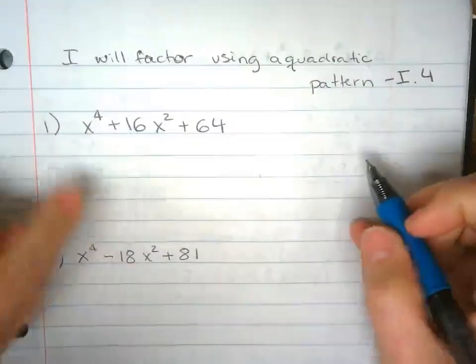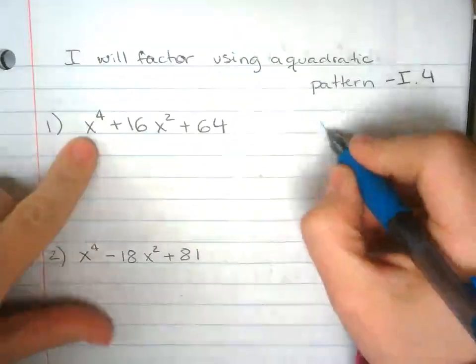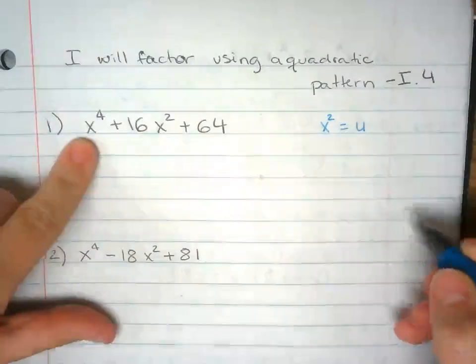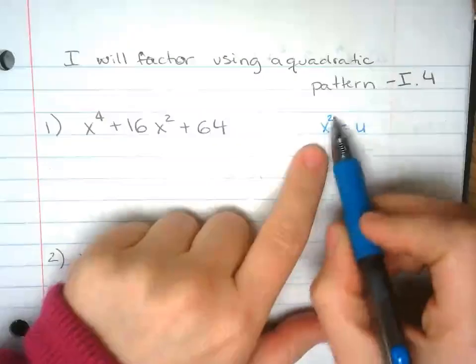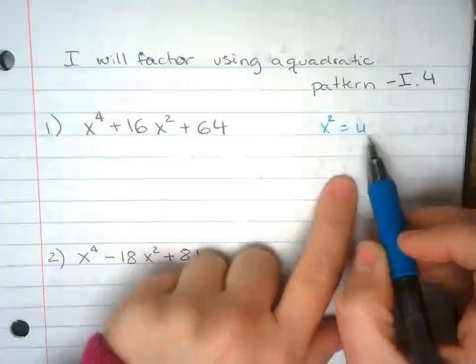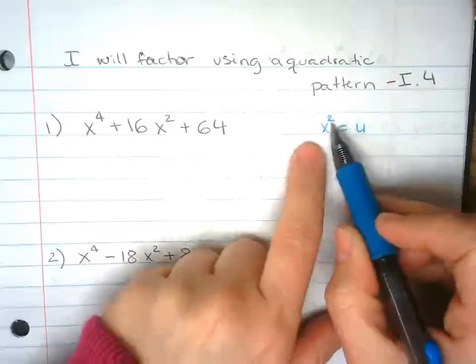So what we're going to do here, our trick is we're going to substitute x squared for u. So instead of writing or dealing with x squared, it's like we're factoring out u and u is going to represent x squared.